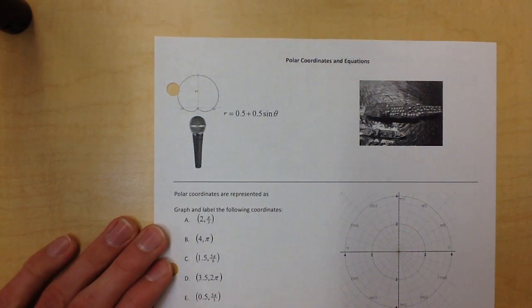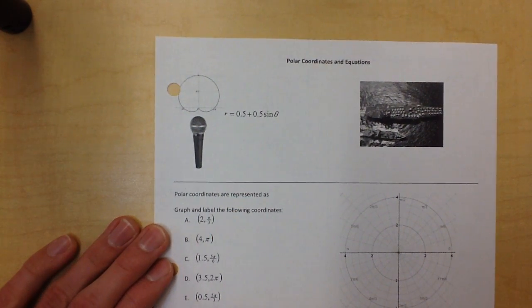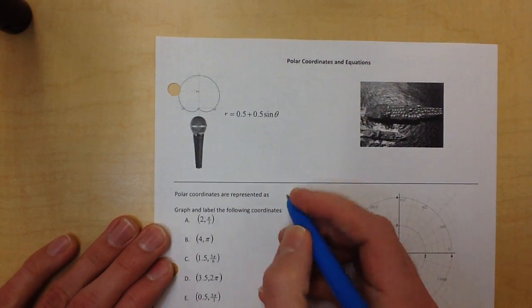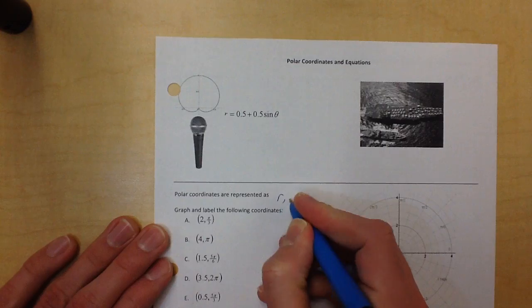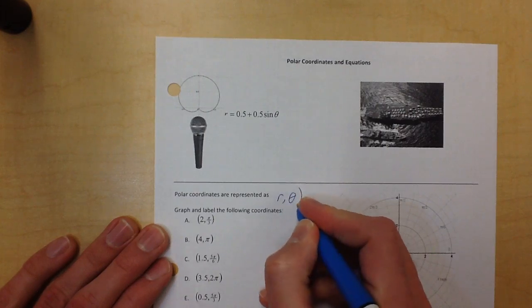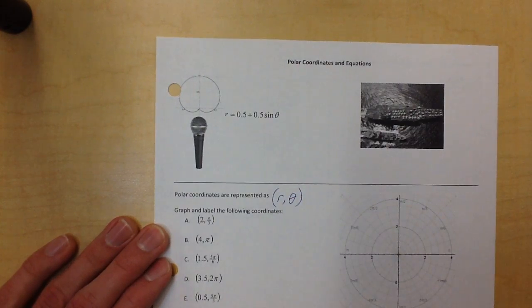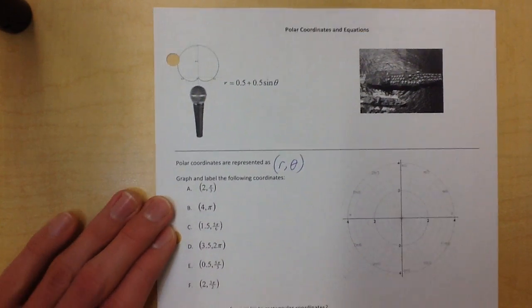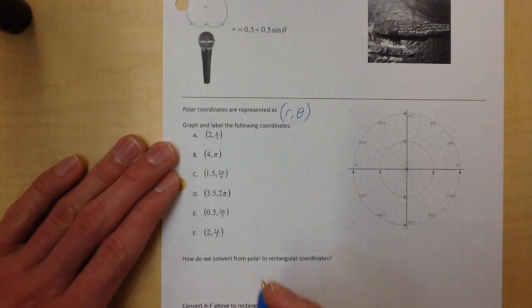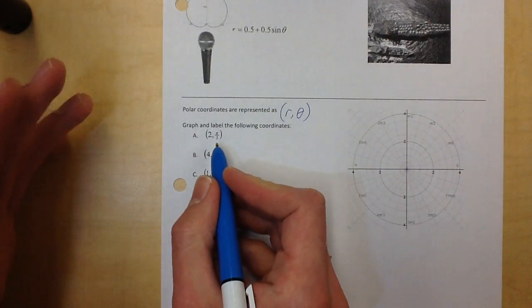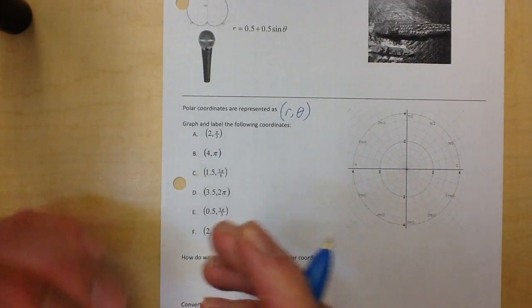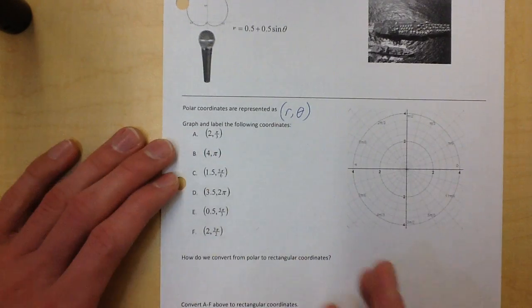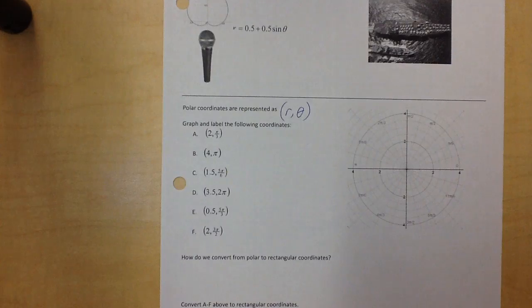Polar coordinates are represented as r comma theta, and it's not that hard. Trust me, you got this. We're going to just plot each one of these. It's going to be really easy at first, and we'll discuss some stuff as we go through it.